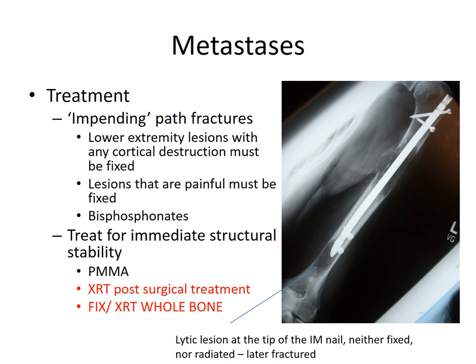When considering treatment for metastatic disease, we need to think about structural stability — whether treating a displaced pathologic fracture or an impending pathologic fracture. An impending pathologic fracture is a lesion that hasn't displaced, but lower extremity lesions with any cortical destruction must be fixed. Painful lesions most likely need to be fixed. Consideration should be given for bisphosphonate therapy, pre-op or post-op. If a patient has a known malignancy and is on bisphosphonates, you do not need to alter that course of therapy.